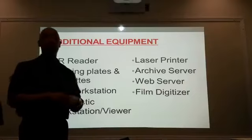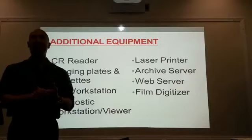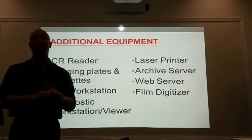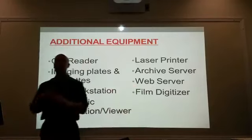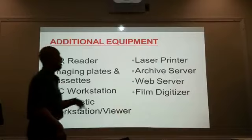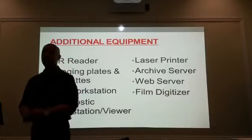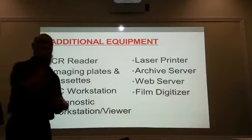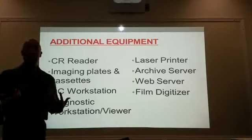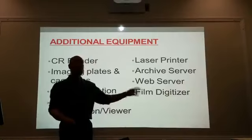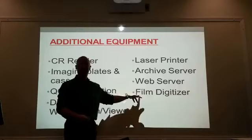If you know both chemical processing and digital processing, it makes you more marketable because you know both. We also need an archive server and web server to store and transmit images. We also have a film digitizer — the conversion from film to digital doesn't happen overnight, so we take all those films and put them through a scanner so they can be stored digitally in our computers.